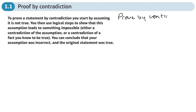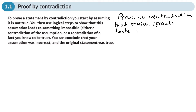For example, prove by Contradiction that Brussels sprouts taste nasty. What I would do is start by trying to prove that Brussels sprouts taste amazing — I would eat some Brussels sprouts — then come to the conclusion that they do taste nasty, arriving at some sort of contradiction to my original statement. You prove the opposite statement and end up with some sort of contradiction or something that doesn't make sense.